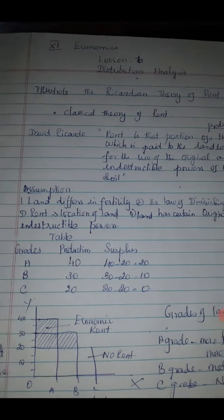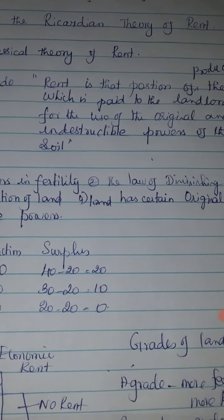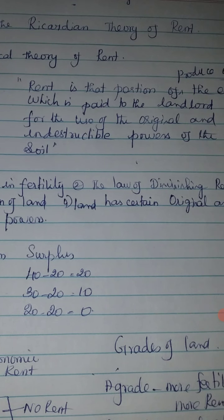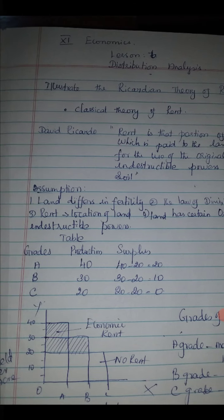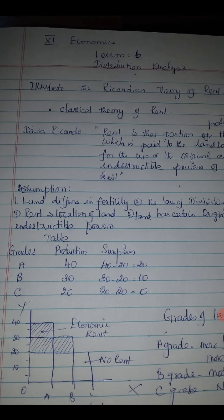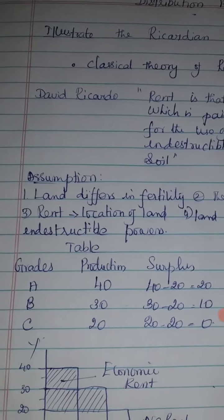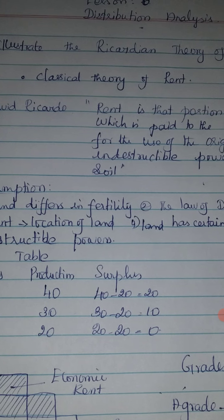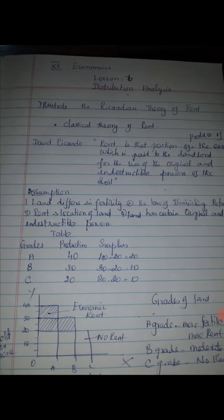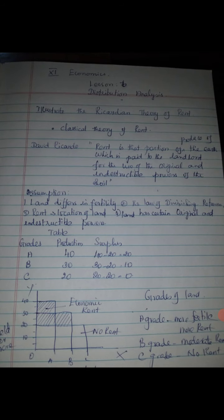The assumptions of the theory include: land differs in fertility, the different types of fertility, the law of diminishing returns, the location of the land, and land is fixed with original and indestructible power.